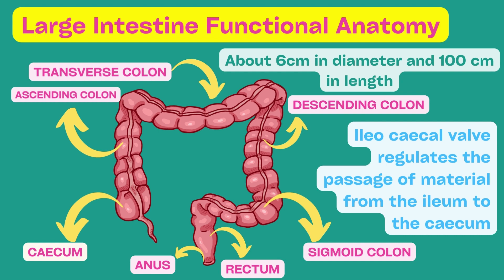The large intestine is about 6 cm in diameter and 100 cm in length. It consists of the cecum, ascending colon, transverse colon, descending colon, sigmoid colon, and rectum. The ileocecal valve regulates the passage of material from the ileum, which is the last segment of the small intestine. Another important thing to remember is the presence of simple tubular glands.